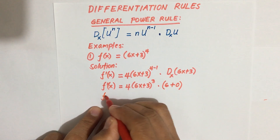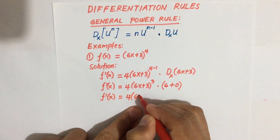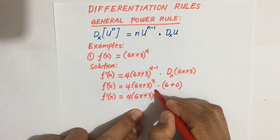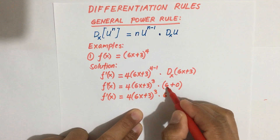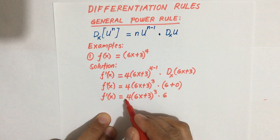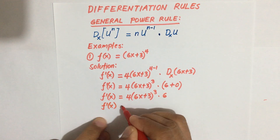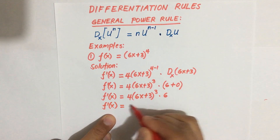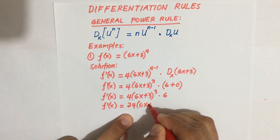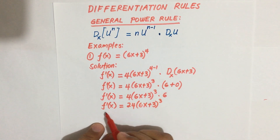So f prime of x equals 4 times 6x plus 3 to the power 3, times 6, since 6 plus 0 equals 6. Multiplying 4 times 6 gives us 24, so our final answer is 24 times the quantity 6x plus 3 raised to the power 3.